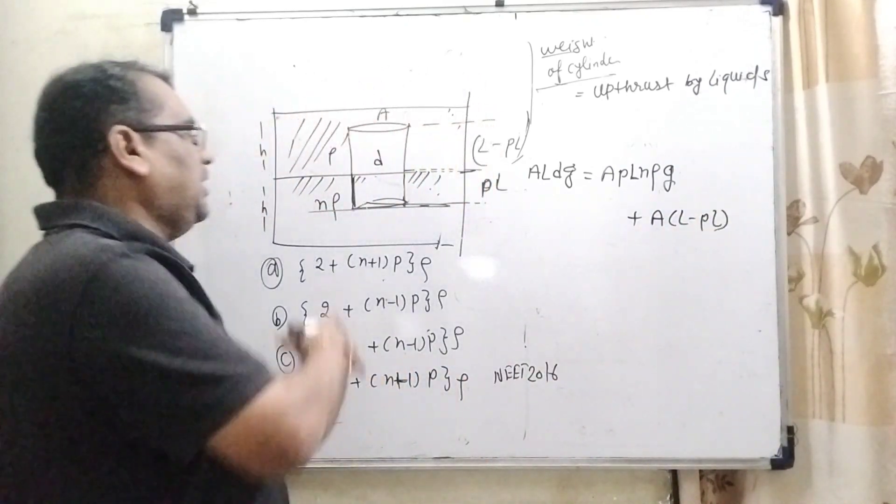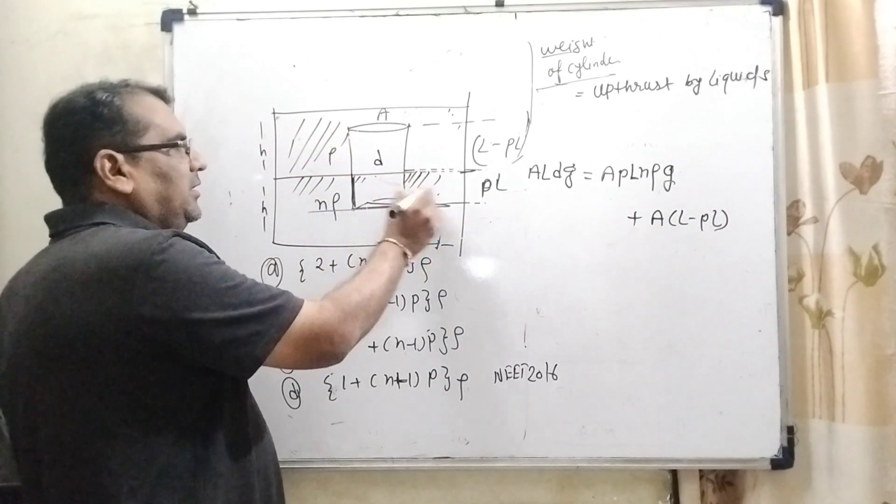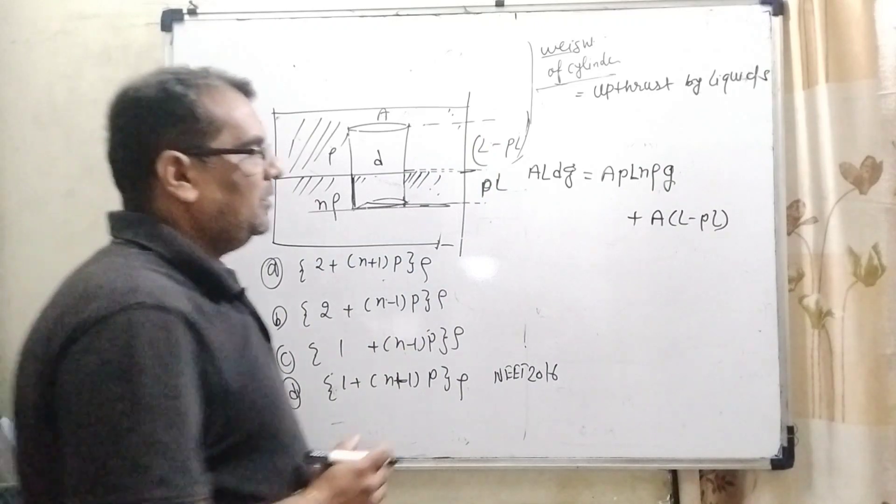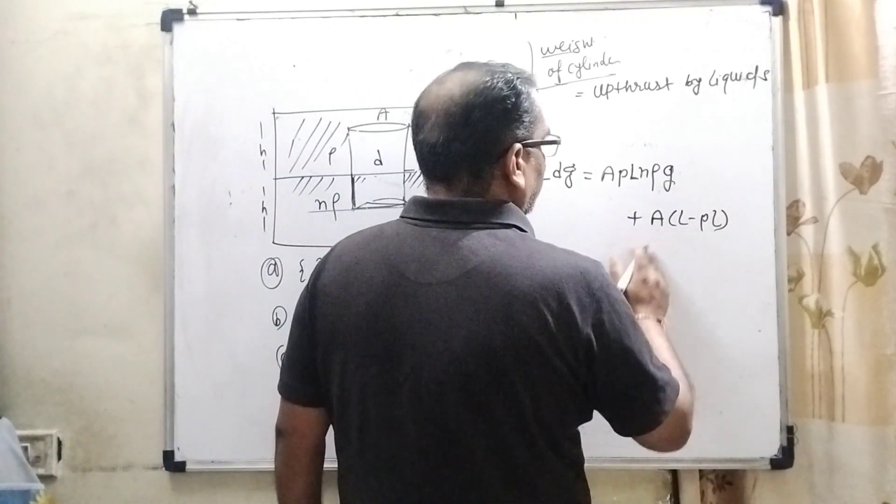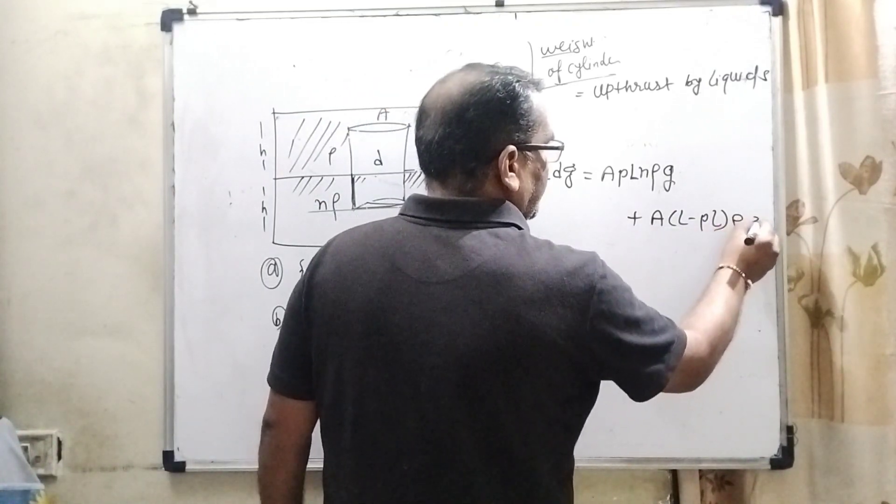Because total length of the cylinder is L and this length is pL, so remaining is L minus pL. Okay, this is the volume. And the density is ρ and g. Is it okay?